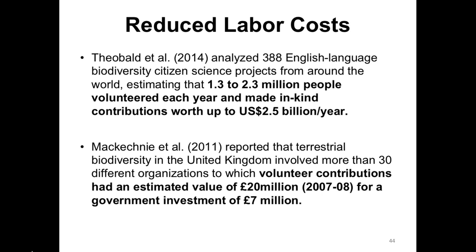There have been very limited studies on the economics of citizen science. A couple of studies look at reduced labor costs. Thibault determined that the in-kind contributions of between one and two million people for 388 English-speaking biodiversity projects was in the neighborhood of $2.5 billion a year. Makachini reported that terrestrial biodiversity in the United Kingdom alone, for more than 30 different organizations, had an estimated value of 20 million pounds of in-kind contributions for a government investment of 7 million pounds.